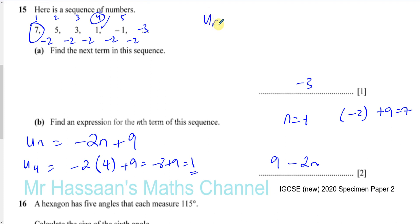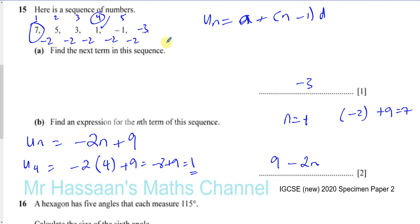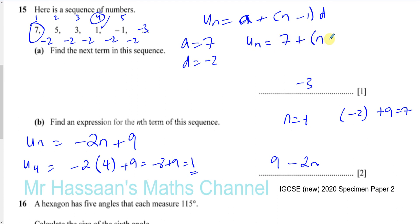There is also a formula that many people learn: u_n equals a plus (n minus 1) times d. I don't really like to go into this formula at IGCSE level because I don't think it's necessary — if you can avoid memorizing a formula and understand it instead, that's better. But for those used to it, this formula works for any term in an arithmetic sequence as long as it's going up or down by the same amount. Here, a stands for the first term which is 7, and d stands for the common difference which is minus 2.